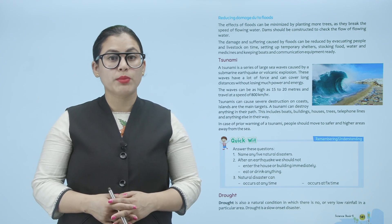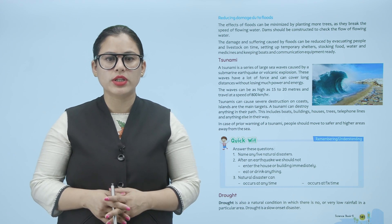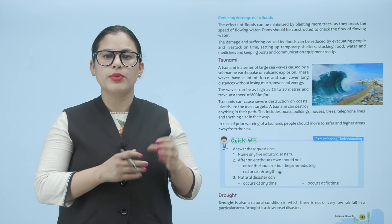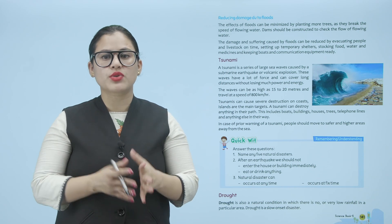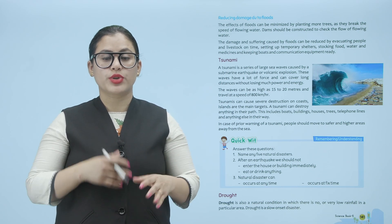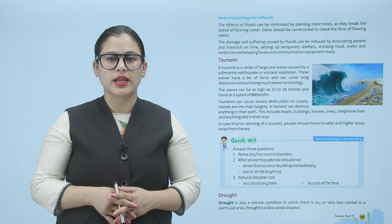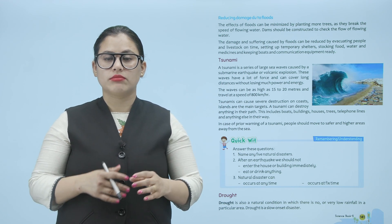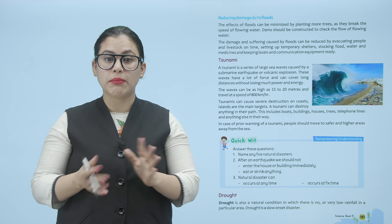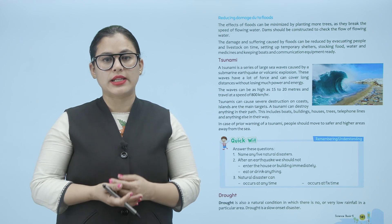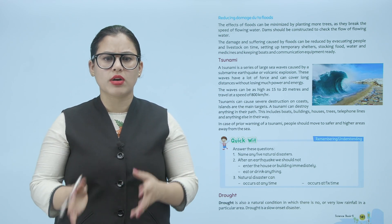Floods can be minimized by planting trees, because they break the speed of the flow of water. Dams should be constructed. Damage and suffering from floods can be reduced by evacuating people on time, setting up temporary shelters, and stocking food, water and medicine.